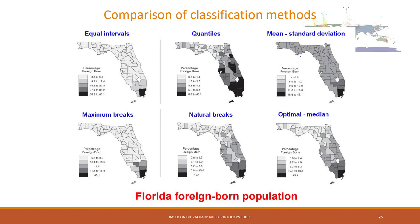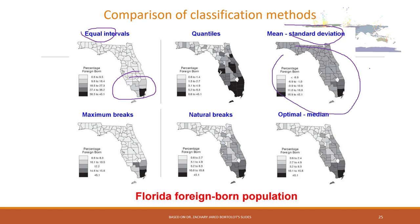Remember that choosing different data classifications means the map will tell a different story. For example, using equal intervals we may see a cluster pattern in the population data, while using standard deviation we see a more uniform pattern. Data classification is very important — your map or visualization will look totally different depending on the method chosen. There is no absolutely right or wrong method; it is case by case, and as the map designer you need to justify why you chose a specific data classification method.